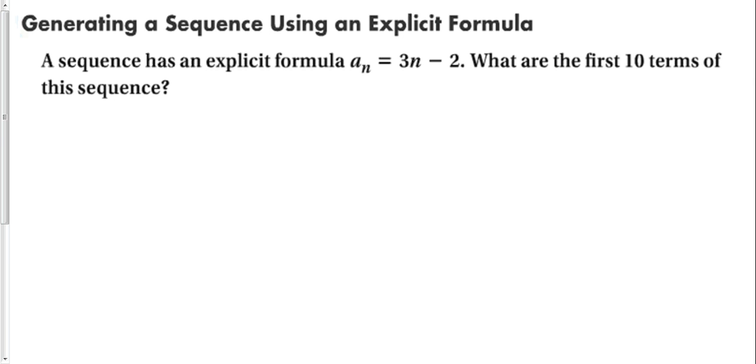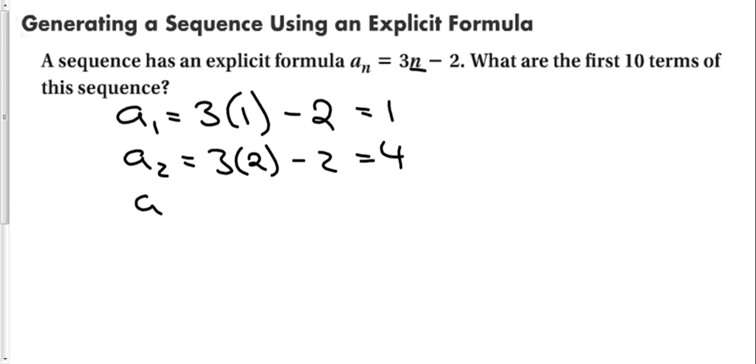Next, let's use an explicit formula to generate a sequence. We're going to start with my first term. It's going to be 3. Plug in the term I'm looking for right there. 3 times 1 minus 2. 3 times 1 minus 2 is 1. To find the next term, instead of the 1, I plug in the 2. Minus 2. That's going to give you 4.